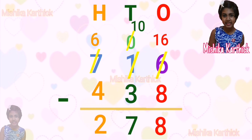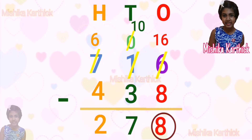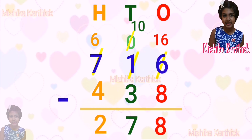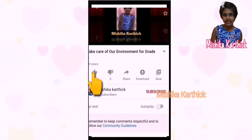Now we have 2 hundreds, 7 tens, 8 ones. So the number is 278. 716 minus 438 equals 278.